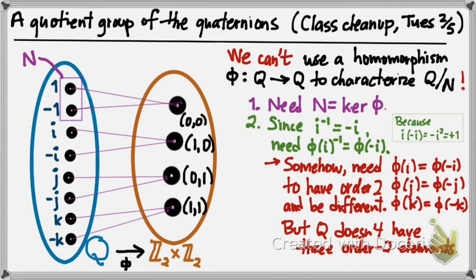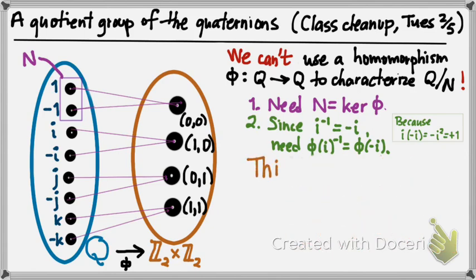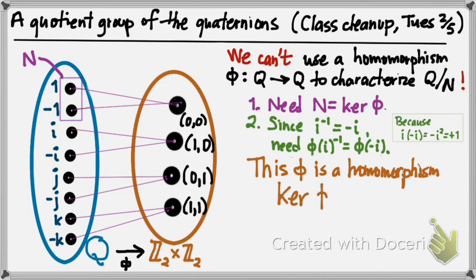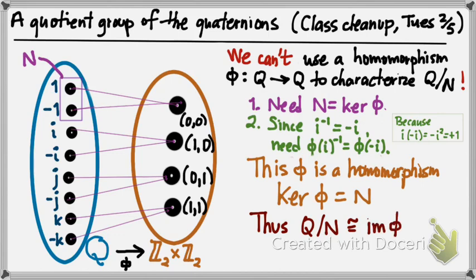We can check that this function actually is a homomorphism from Q into the Klein four-group. If this φ really is a homomorphism, then since the kernel of φ is exactly the normal subgroup N inside Q, the first isomorphism theorem tells us that Q mod N is isomorphic to the image of this homomorphism. The image hits every single element in the Klein four-group, so the image is the entirety of the Klein four-group.